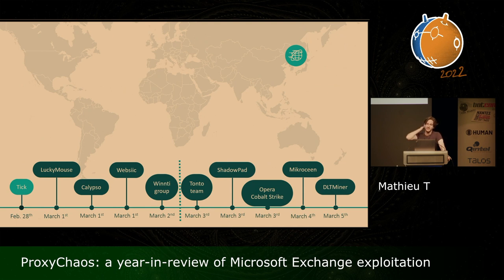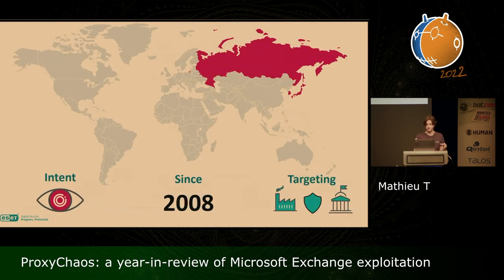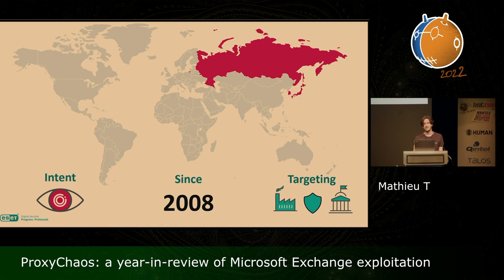Let's start with the first group we've seen exploiting the vulnerability, which is TICK. TICK started exploiting the vulnerability on February 28th, and they compromised the mail server of a company based in East Asia that provides IT services. Since the patch was released on March 2nd, it means that TICK had prior knowledge of the vulnerability. TICK is a pretty old cyber espionage group that is active since at least 2008, and their main objectives are IP and classified information theft. In the past, we've seen them targeting the industrial sector, the defense and military sector, as well as government organizations. The victims are mostly based in Russia, Japan, and South Korea.